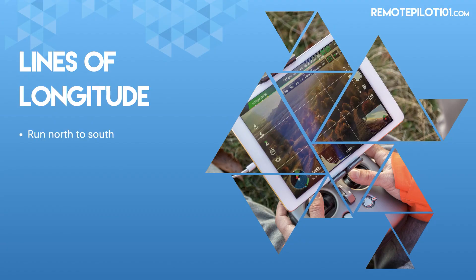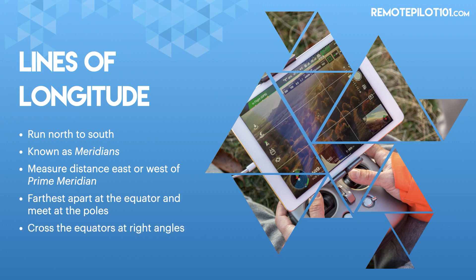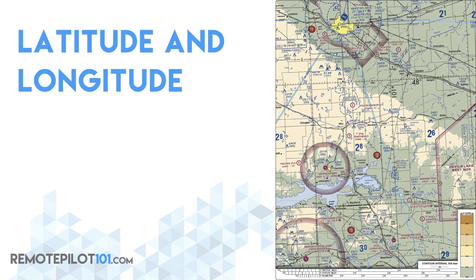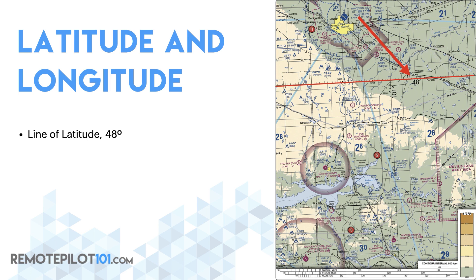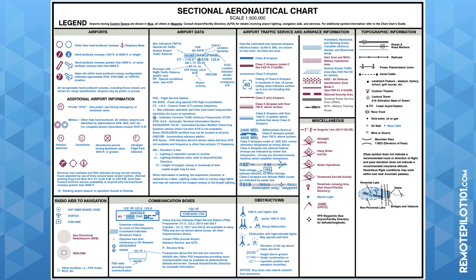Lines of longitude run north to south and are known as meridians. The zero line is the prime meridian through Greenwich, England. Lines of longitude are farthest apart at the equator and meet at the poles, cross the equator at right angles, and are equal in length. To find a latitude of 48 degrees, then find the line of longitude of 101 degrees — each tick mark is one minute, and larger tick marks indicate 10 minutes. These figures also have a scale at the bottom, so if you're asked to find a particular object at a certain distance from an airport, you can use a piece of scratch paper to make a ruler to measure it. If you get stuck and don't remember the symbology, go back to legend one.